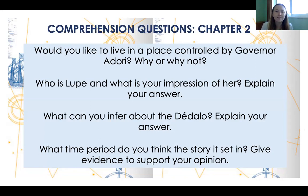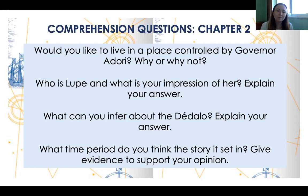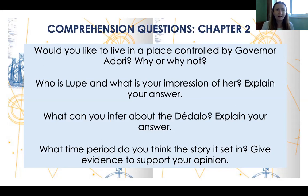Chapter two questions: Would you like to live in a place controlled by Governor Adory — why or why not? I'd like a lot of detail and evidence from the text, not just your opinion. Who is Lupe and what is your impression of her? What can you infer about the dead Allo? What time period do you think the story is set in — give evidence to support your opinion.